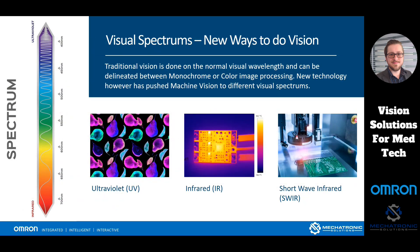The first trend I want to talk about in machine vision is dealing with visual spectrums. Typically in machine vision, we do all of our analysis on the normal wavelength spectrum — the type of viewing that we see through our eyes every single day. But utilizing different types of sensors and different wavelengths, we can actually achieve all sorts of new ways to do machine vision. I'm going to talk about three cases today, starting with ultraviolet.